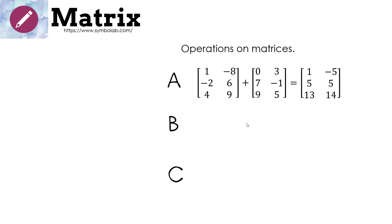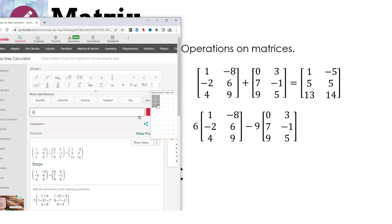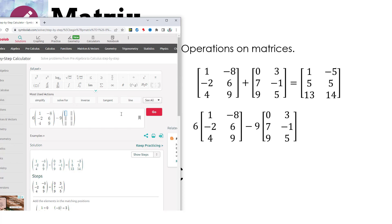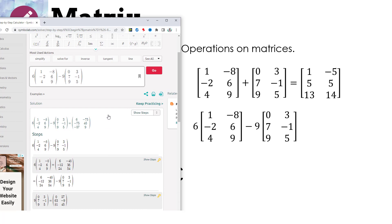Now let's do a scalar times a matrix minus a scalar times another matrix. Our scalar is 6, multiplied by the 2 by 3 matrix [1, negative 8, negative 2, 6, 4, 9], minus a scalar of 9 times the 2 by 3 matrix [0, 3, 7, negative 1, 9, 5]. We press go and our answer is: 6, negative 75, negative 75, 45, negative 57, and 9.